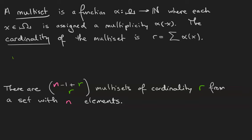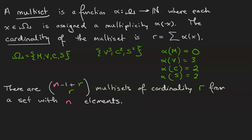Our last example, we had the universe was meat, veggie, cheese, salsa. Our multiset was veggies three times, cheeses twice, salsas twice. Alpha of meats was zero because that didn't appear in our multiset at all. Alpha of veggies was three because it appeared three times. Alpha of cheeses was two. Alpha of salsas was two. And if you add all those numbers together, you get seven, which is the cardinality of the multiset.